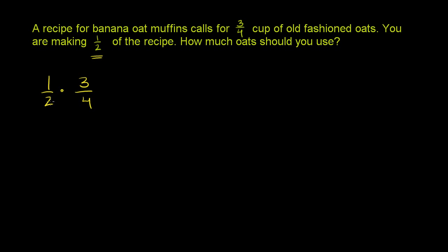You just multiply 1/2 times 3/4. And this is equal to—you multiply the numerators, 1 times 3 is 3, 2 times 4 is 8. And we're done. You need 3/8 of a cup of old-fashioned oats.